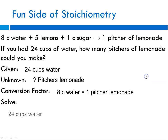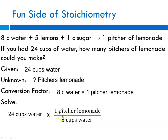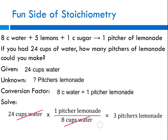Our conversion factor comes from the recipe: 8 cups of water equals 1 pitcher of lemonade. Starting with our given: 24 cups of water, times our conversion factor. We want water to cancel, so we put pitcher of lemonade in the numerator and cups of water in the denominator — 1 pitcher over 8 cups. Cups of water cancel out, leaving us with pitchers of lemonade. Plugging into the calculator: 24 times 1 divided by 8 gives us three pitchers of lemonade.